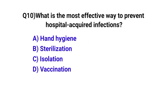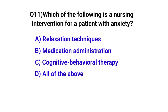Question number ten: what is the most effective way to prevent hospital-acquired infection? The correct option is A, hand hygiene. Question number eleven: which of the following is a nursing intervention for a patient with anxiety? The correct option is D, all of the above.